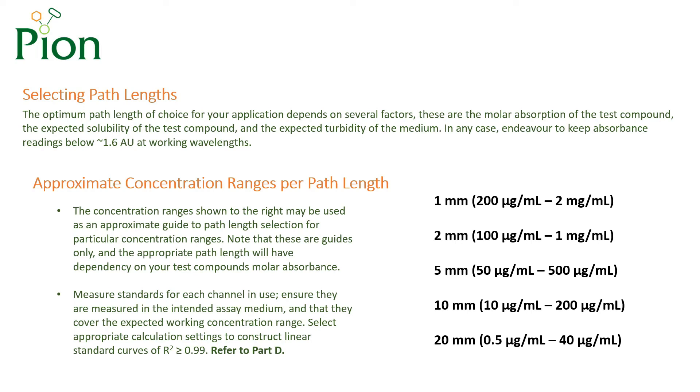When selecting a path length tip initially, we advise basing your initial selection on the expected concentration ranges shown here. Bear in mind that also you should aim to remain below a working absorption value of 1.6 absorbance units.